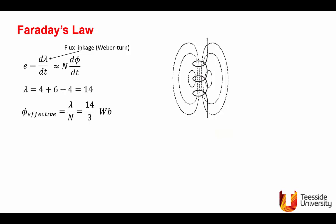If you wish to define an effective value of the flux that when multiplied by the number of turns of the coil will give you the flux linkage, you will get phi effective is lambda over N, which is 14 over 3 Weber in this particular case. You remember the right-hand rule? If the current is as shown in red, the flux lines will be going upward in the center of the coil. So this is just a reminder of the directional relationship between current and flux.